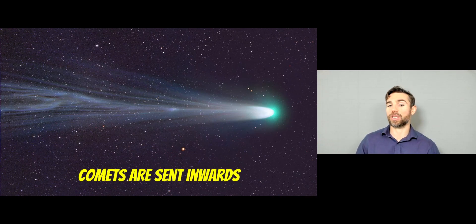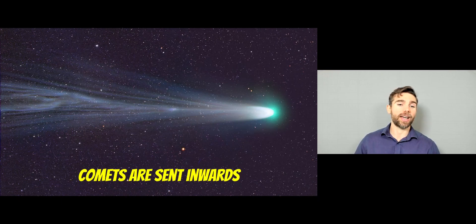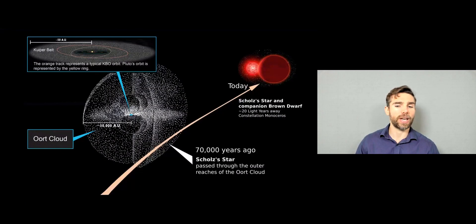So some of these comets we see, they have originated there because they originate in a solar system because of a stellar flyby from a star. So here, you've actually got this occurring about 70,000 years ago. So you had this red dwarf star and its companion brown dwarf. It's not a particularly very big system. It's quite small, actually.